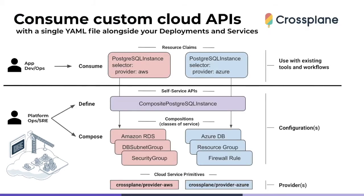What we're going to look at today is how you can provision a PostgreSQL instance with a resource claim using your existing tools and workflows, which provisions a composite PostgreSQL instance composed of multiple cloud service primitives from the Crossplane AWS provider to dynamically provision that in your team workspace.